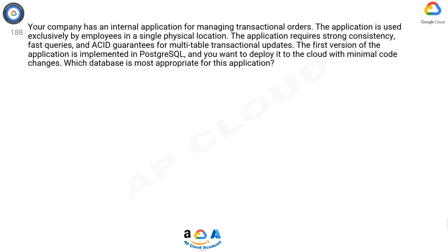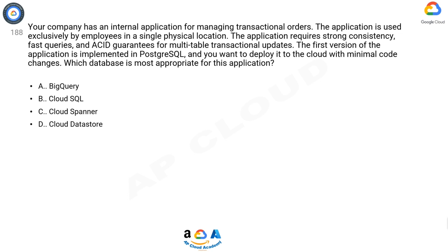Question 188: Your company has an internal application for managing transactional orders. The application is used exclusively by employees in a single physical location. It requires strong consistency, fast queries, and ACID guarantees for multi-table transactional updates. The first version is implemented in PostgreSQL and you want to deploy it to the cloud with minimal code changes. Which database is most appropriate? A) BigQuery, B) Cloud SQL, C) Cloud Spanner, D) Cloud Datastore.